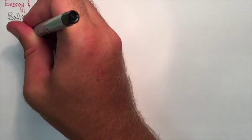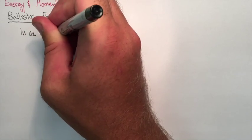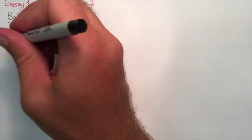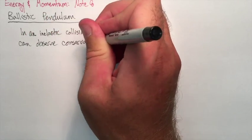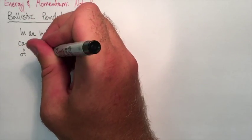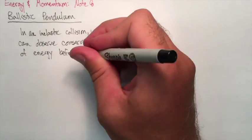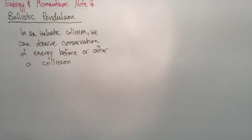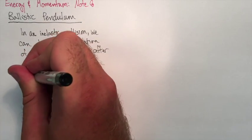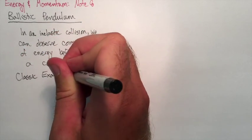Here we're going to deal with an inelastic collision. The typical example is when you're shooting a bullet into a box and that box is hanging by a string. When that bullet combines with the box, it's going to swing up to a certain height. Based on the height that it swings up to, we can calculate the initial speed of that bullet.